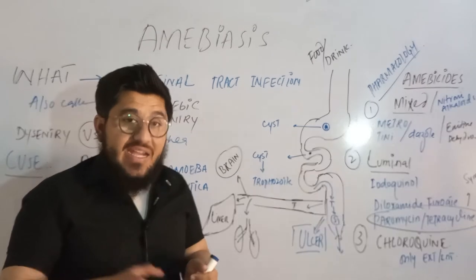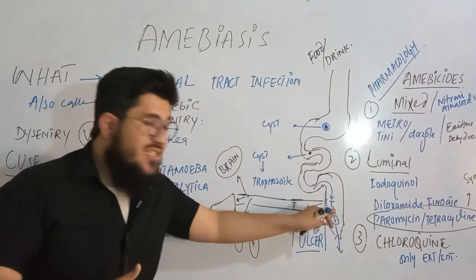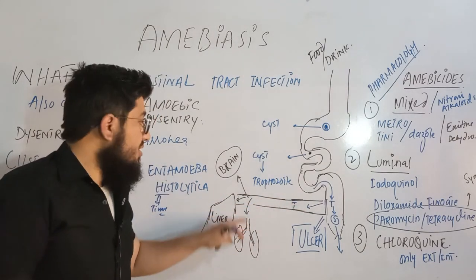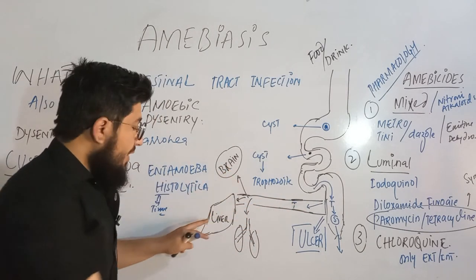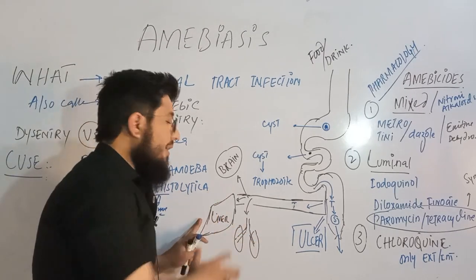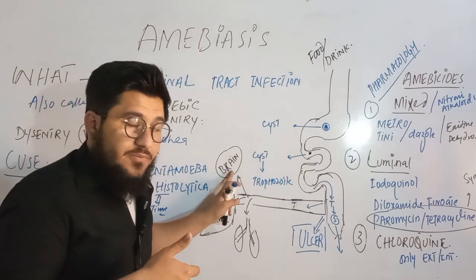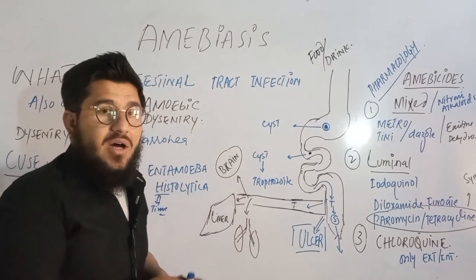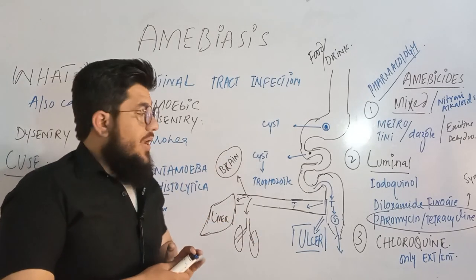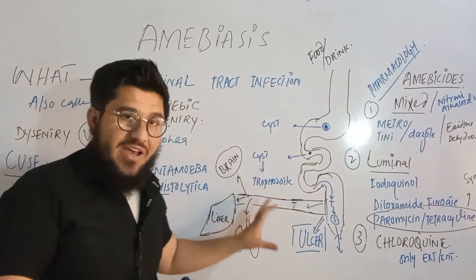Then these trophozoites find their way inside the body. From the intestine, they start moving towards the liver, lungs, and brain. They reach the liver and lungs quite often, but in a very rare way they also reach the brain. Once they reach these organs, they will cause abscess in the liver, lungs, and brain. This is how amoebiasis causes infection.